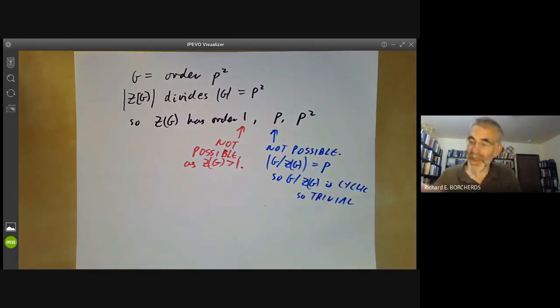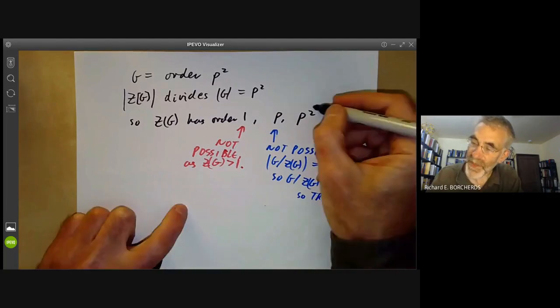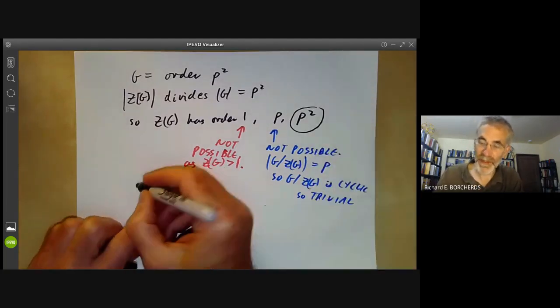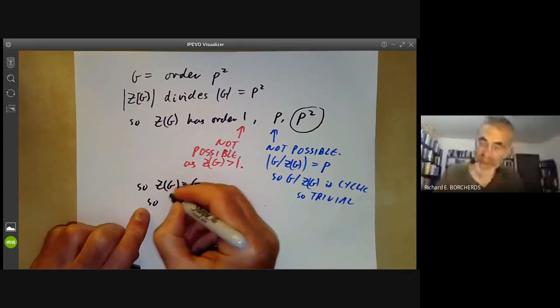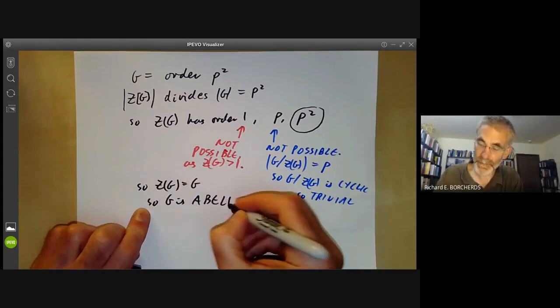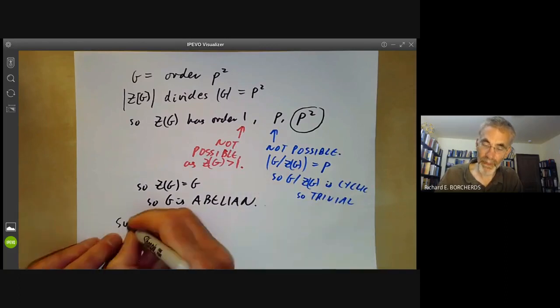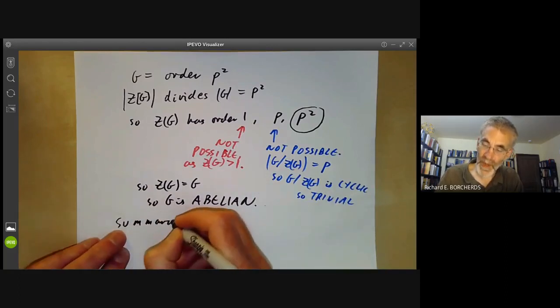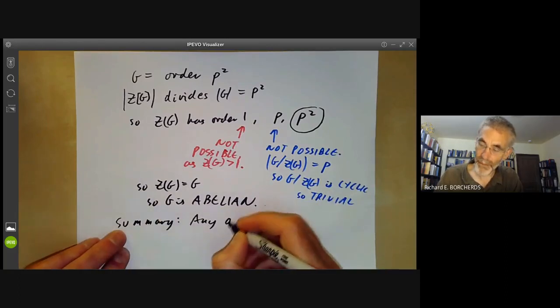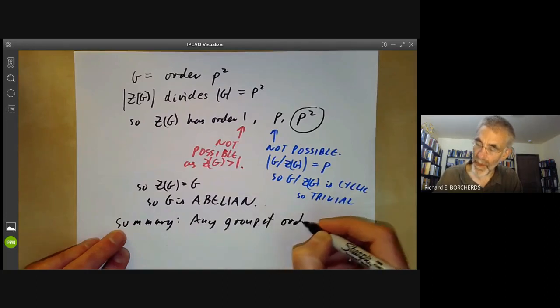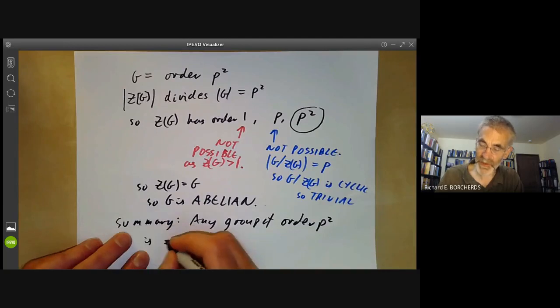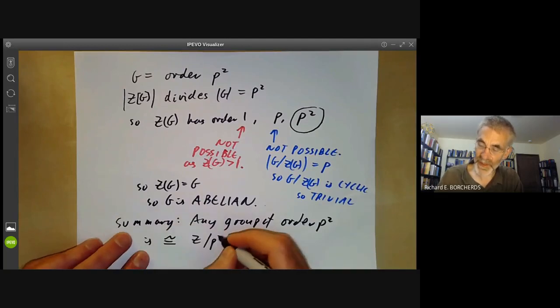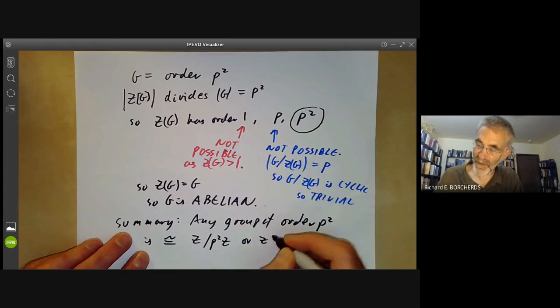So the centre of G must have ordered P squared. So the centre of G is equal to G, so G is abelian. So summary, any group of order P squared, where P is a prime, is isomorphic to Z modulo P squared Z or Z over PZ times Z over PZ.